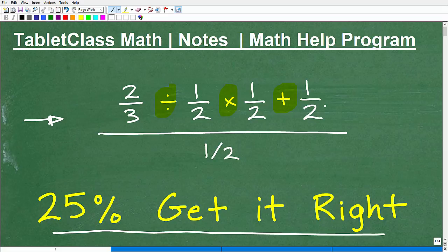Now, of course, to do this problem, you already need to know how to add, subtract, multiply, and divide fractions at a minimum. But what else are we dealing with here? Well, I have mathematical operations. I have division, multiplication, addition, and then this little fraction bar down here is also division. So when you have all these different mathematical operations, these are called operations, addition, subtraction, multiplication, division, and then there's powers and everything else.